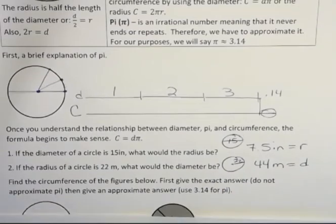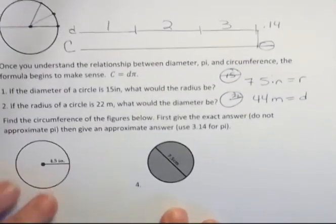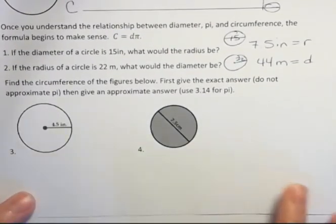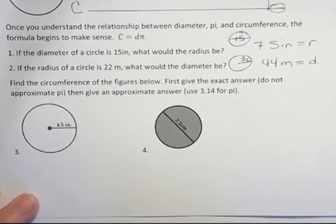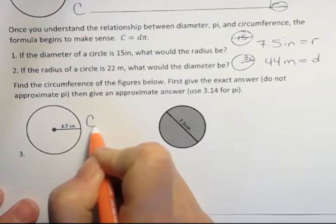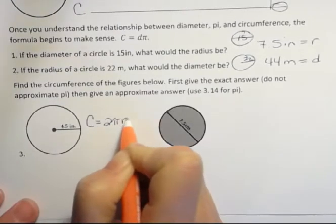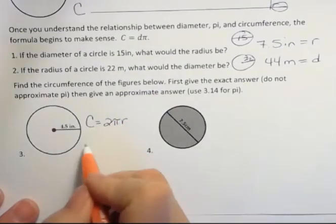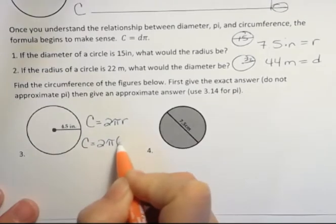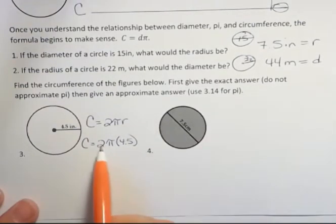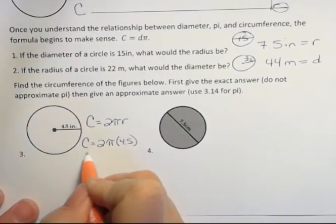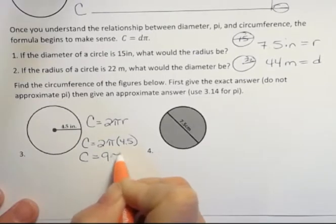And then I ask you to find the circumference of the figures below. And then I say something weird. Give the exact answer. Do not approximate pi. And then give the approximate answer. Well, one of these has a radius. So I'm going to use the formula c equals 2πr for this because I have the radius. So I'm going to say c equals 2π. And then instead of radius, I'm going to put in the 4.5. Now, whenever I do this, I want to multiply these numbers. 2 times 4.5 is 9. And so I get the circumference equals 9π.